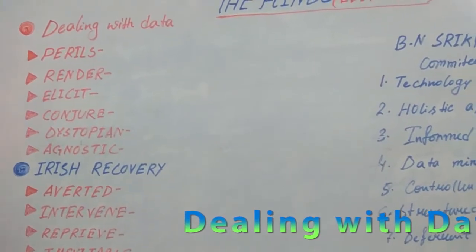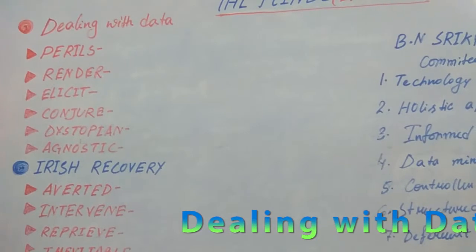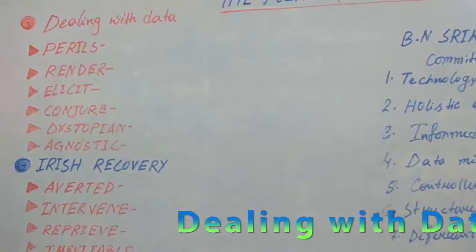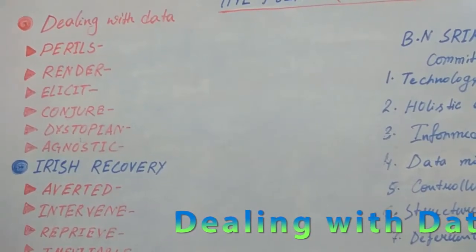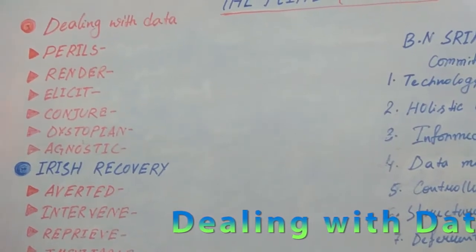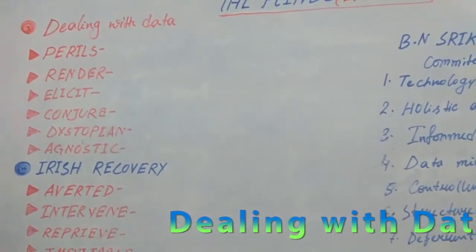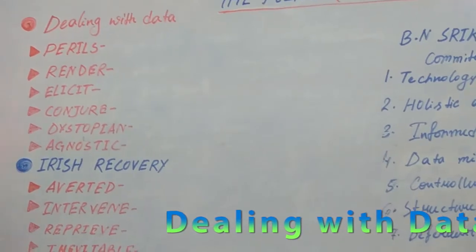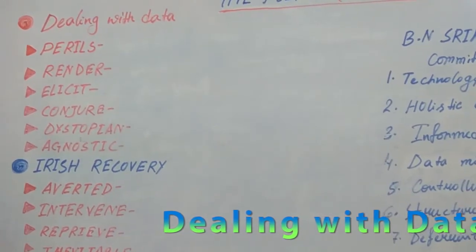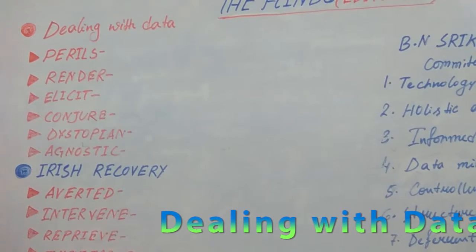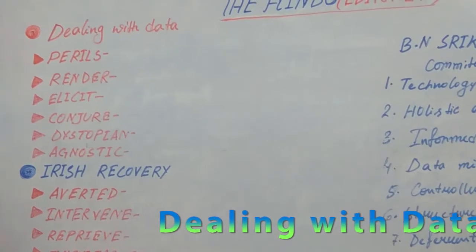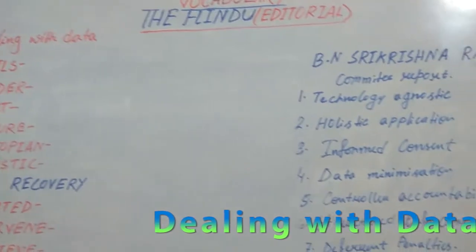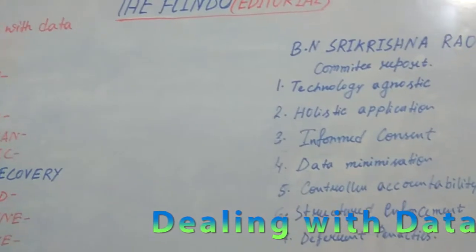How can we make these laws? In this article, there is a suggestion of two areas from which we can take ideas: from the European Union law and from the American law. Two or more committees have been formed, like the BN Krishna committee and the Chaha committee, and they have recommended a few things. You should read about them on Google.